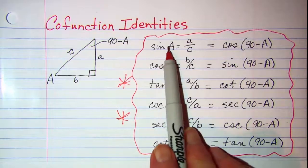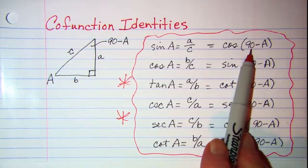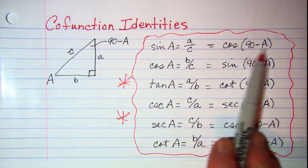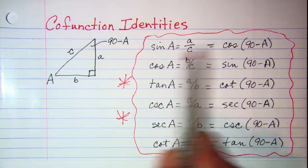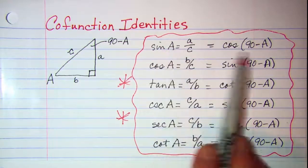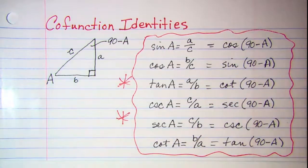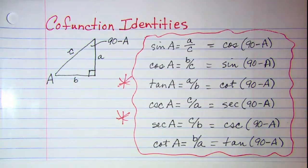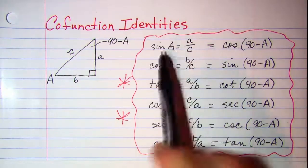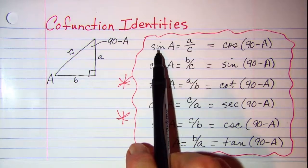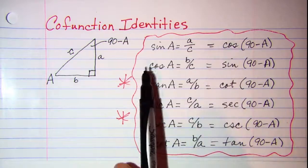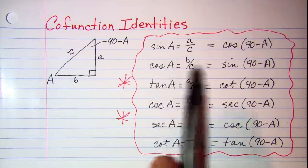Whenever you have identities, that means they're equal, so you can substitute one expression in for the other or vice versa. The co-function identities are pretty easy to remember if you just remember that they're co-functions: for sine, the co-function is cosine, and for cosine, the co-function is sine, and so forth.